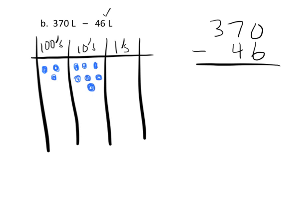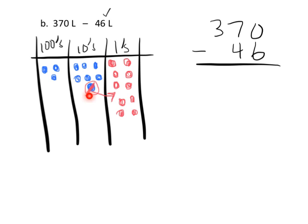So what we're going to do is take one of these tens and cash it in for 10 ones: 1, 2, 3, 4, 5, 6, 7, 8, 9, 10. Now what I have is 3 hundreds, 6 tens, and 10 ones—that's still the same as 370. All I did was take one ten and cash it in for 10 ones, like taking a $10 bill and exchanging it for ten $1 bills. Now we can subtract the 6.